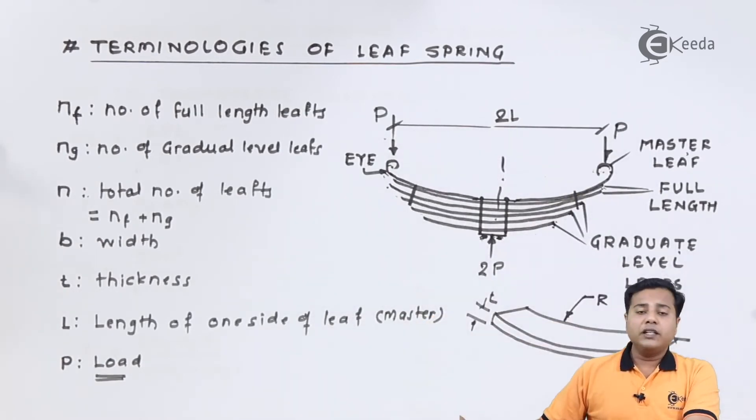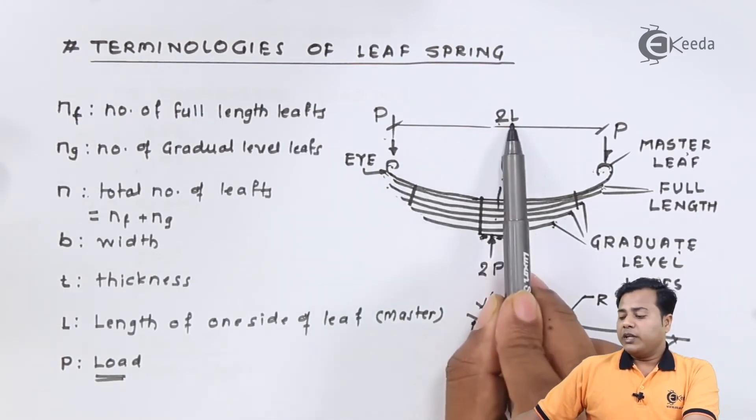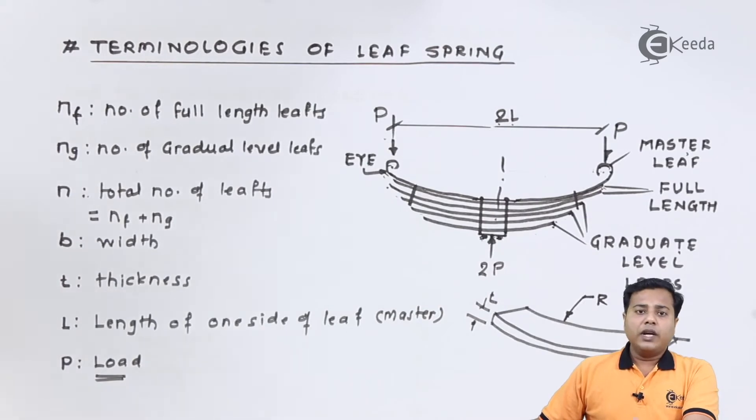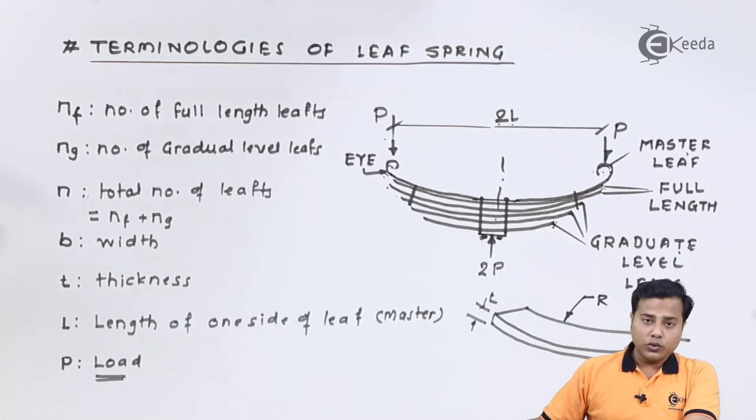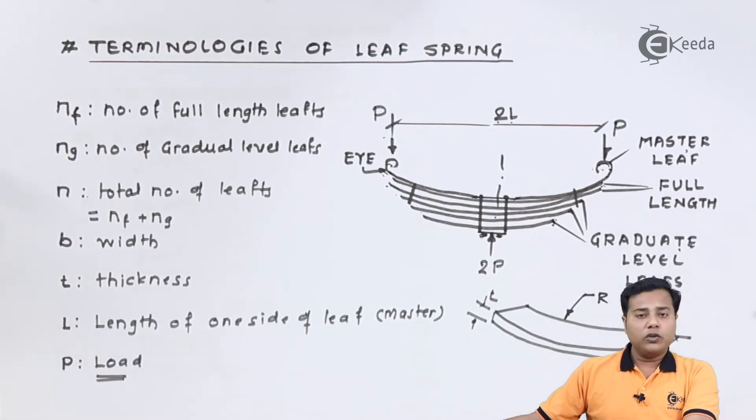Next is the center to center distance as far as the master leaf spring is concerned. It is assumed that 2L is the length, so accordingly the parameter will change. If length is 100 millimeter, the center to center distance will become 200 millimeter and so on. So these are the important terminologies.